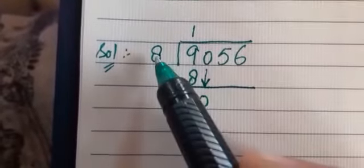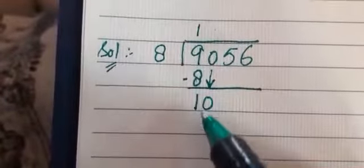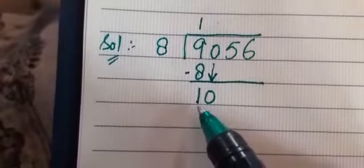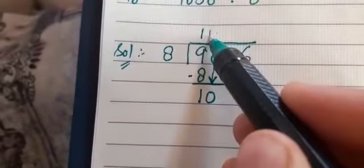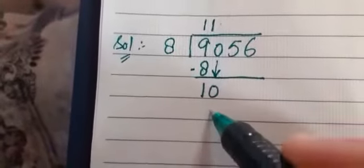And this 1 becomes 10. Again we have to find 10 in the table of 8. So 8 ones are 8, 8 twos are 16. Again it will be bigger, so we will divide it by 8 ones are 8.